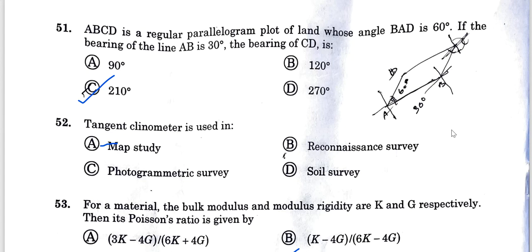Today we are going to discuss question number 51. ABCD is a regular parallelogram plot of land whose angle BAD is 60 degrees. If the bearing of line AB is 30 degrees, what is the bearing of CD? We will use the bearing or back bearing concept to get the answer as 210 degrees. Option C is the correct answer.